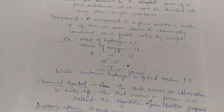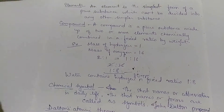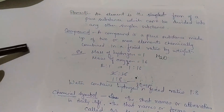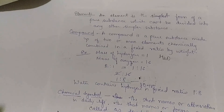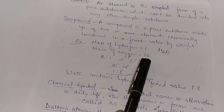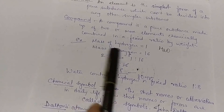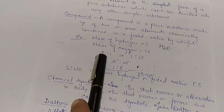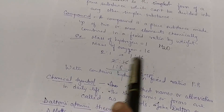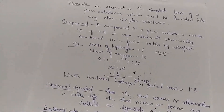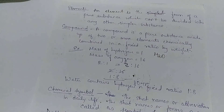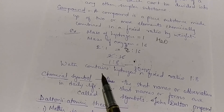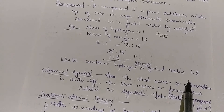For example, water is made up of two elements, hydrogen and oxygen, written as H₂O. The mass of hydrogen is 1 and the mass of oxygen is 16, taken from their atomic weights. Two atoms of hydrogen and one atom of oxygen give a ratio of 2:16, which simplifies to 1:8. So water contains hydrogen and oxygen in a fixed ratio of 1:8.